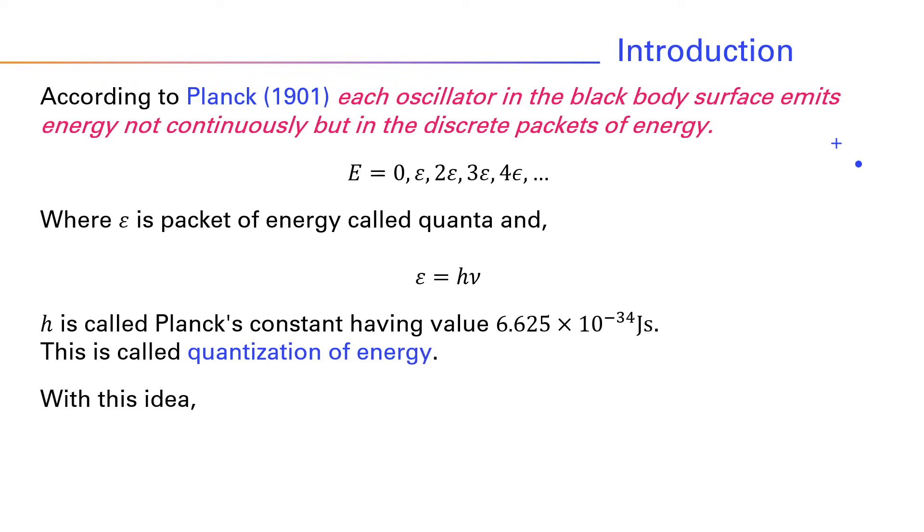With this idea, Planck successfully explained the black body radiation. He obtained the formula for energy density as E_λ dλ = (8πhc/λ^5) × 1/(e^(hc/λkT) - 1) dλ (equation 5). This is Planck's radiation formula. This is in exact agreement with the experimental results.